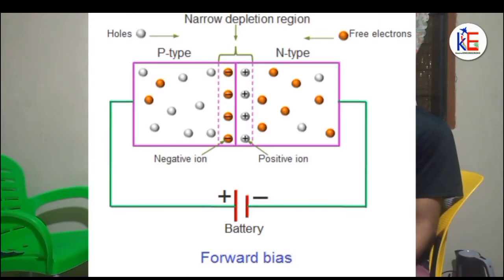Forward bias: Here, the positive terminal of the source is connected to the anode, and the negative terminal is connected to the cathode. When this happens, the depletion layer becomes very narrow, which makes it possible for conduction to take place.